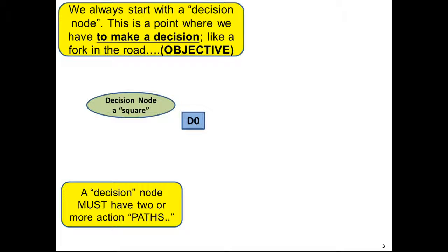Now if you have to make a decision you must at least have two possible options for what we call paths. In this case we have the cruise, the road trip, or stay at home.